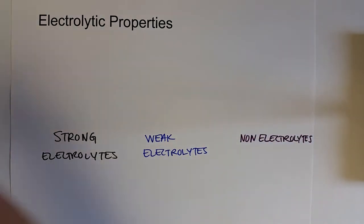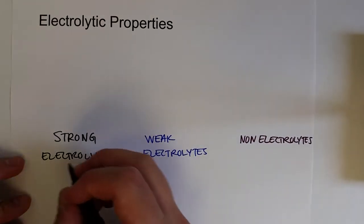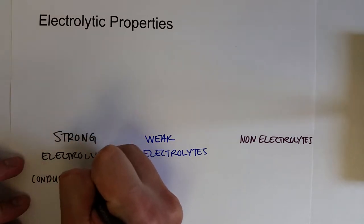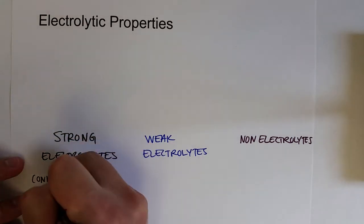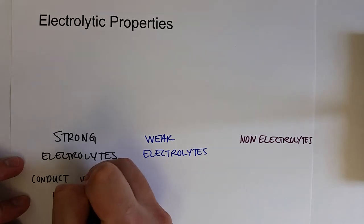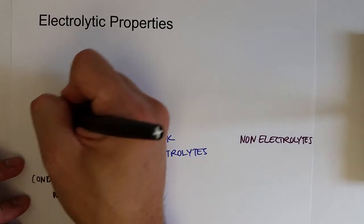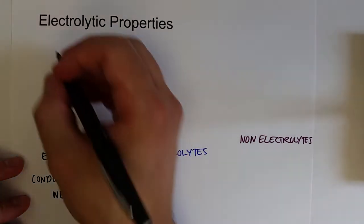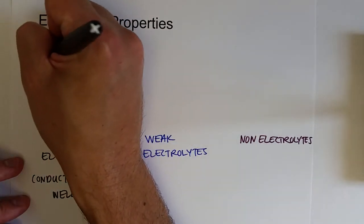So the three different scenarios that's set up is that strong electrolytes cause solutions to conduct electricity very well. And the examples or types of strong electrolytes are soluble ionic compounds.